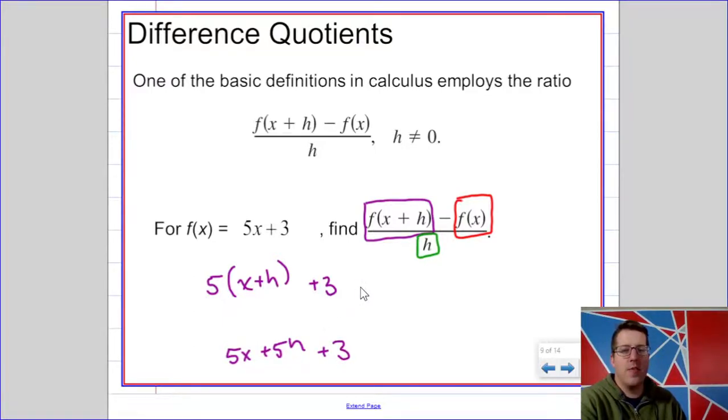The function evaluated at x is just as it's shown, but we do need to be careful here. I'm subtracting all of 5x plus 3, so I need to watch my signs. As we get closer to the final answer, we're going to subtract 5x and 3. Finally, we're going to divide by h.